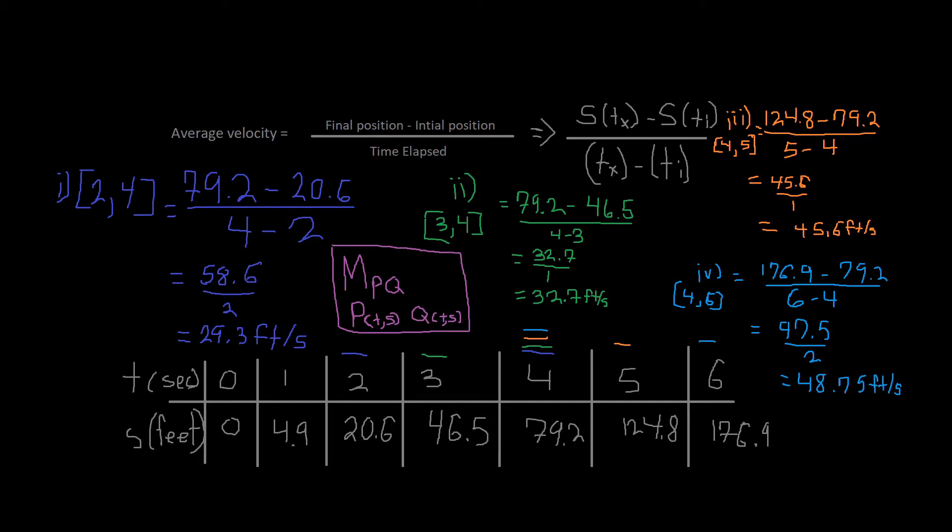We can use a and b if we wanted to instead of these variables. So here's 3 and 4, time interval 3 and 4. So 79.2 minus 46.5, 4 minus 3 because that's the time elapsed. And that ends up getting us 32.7 feet per second.